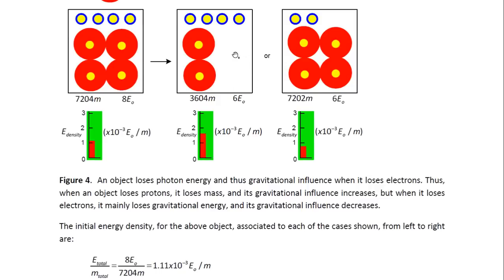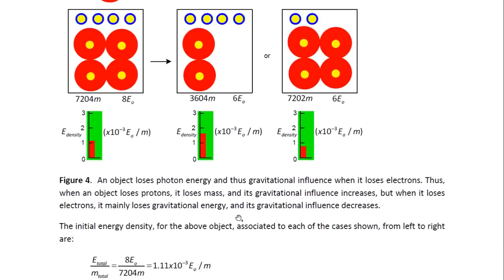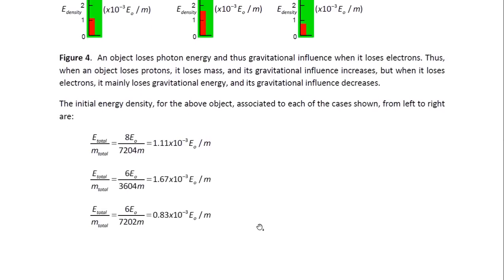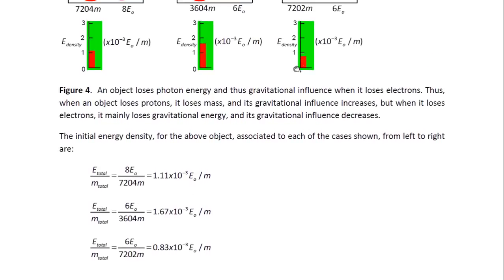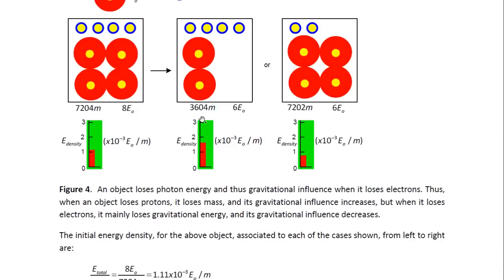Now, if the object loses two protons, then the energy goes down to 6 E₀, but the mass decreases to almost halves, 3,604 M of what we had there. So, when we calculate the energy density, we get 1.67 in terms of 1.1. So, that means that the energy density of this object goes up when it loses two protons. But, when it loses two electrons, it goes down, because now we end up with 7,202 M for the mass and the energy 6 E₀, like over there. When we calculate the energy density, we get 6 E₀ over 7202 M, which is 0.83 instead of the 1.67. So, that's what's shown here. So, we can see that the energy reservoir goes down when the object loses electrons, but it actually goes up when it loses protons.